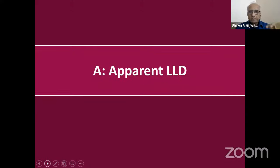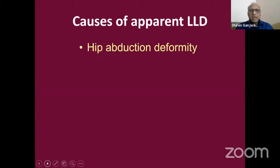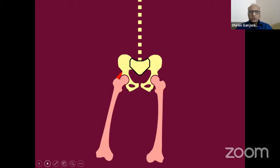Let us first understand apparent limb length discrepancy. It usually appears in a short duration — all of a sudden it appears — and many patients present saying their child was absolutely fine before a few days, and because of some problem in the hip joint, now there is a limb length discrepancy. That tells us this is apparent limb length discrepancy. What are the causes? This is very important from an exam point of view. The first cause is hip abduction deformity, meaning one hip has an abduction deformity where further adduction is not possible.